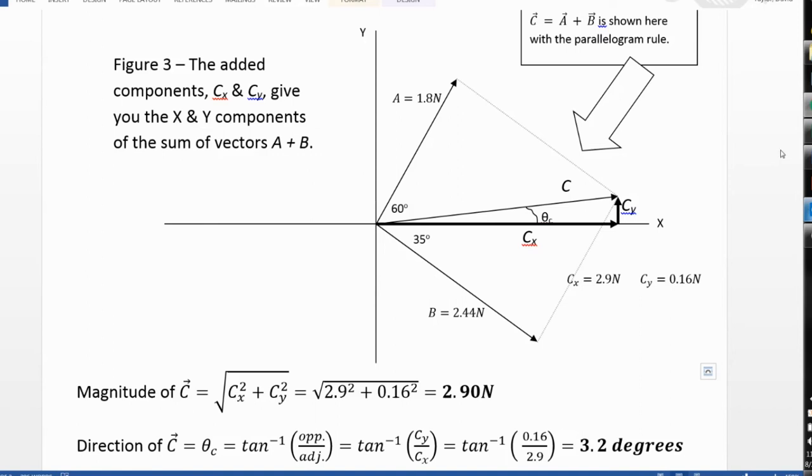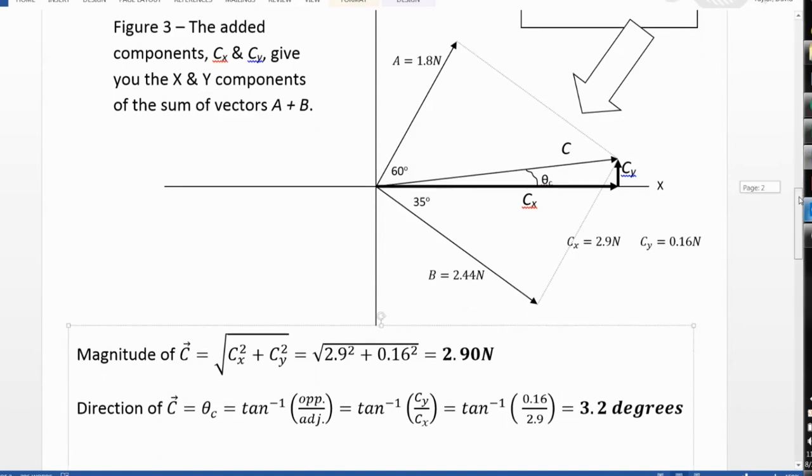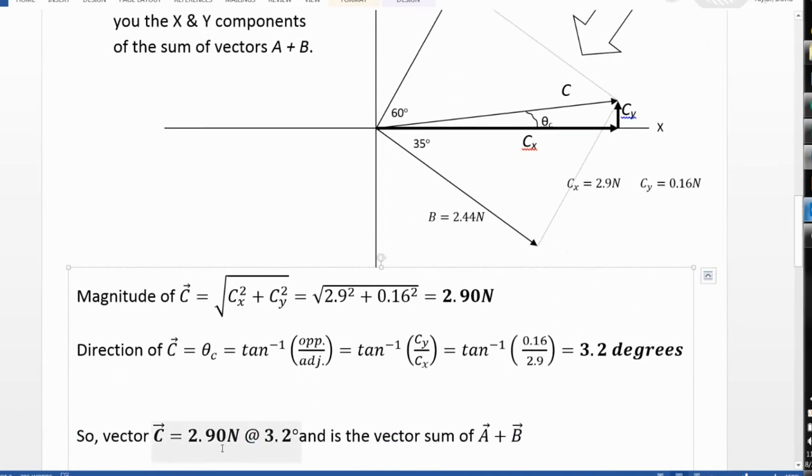So that means my vector C has a magnitude of 2.9 newtons, and it points in the direction of 3.2 degrees. And that is the answer for my vector sum of A plus B.